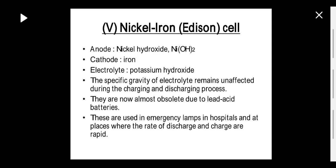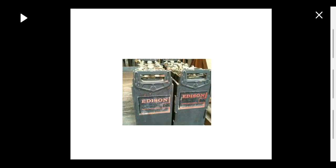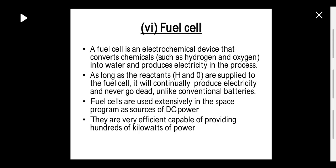The next type is the nickel iron cell. The anode is nickel hydroxide, cathode is iron, and electrolyte is potassium hydroxide. The specific gravity of the electrolyte remains unaffected during charging and discharging. These are now almost obsolete as lead acid batteries have replaced them. They are used in emergency labs, hospitals, and places where rapid rates of charging and discharging are required.